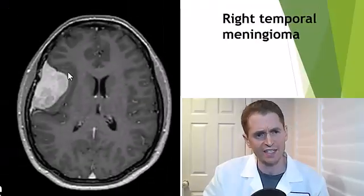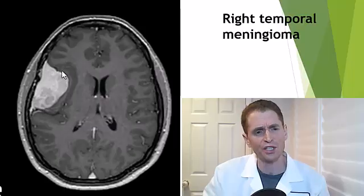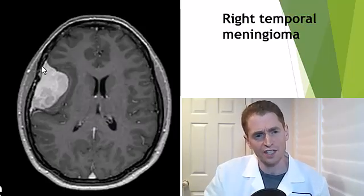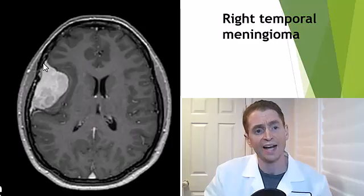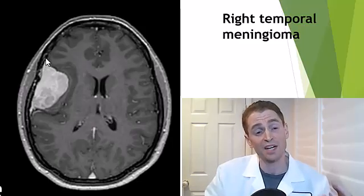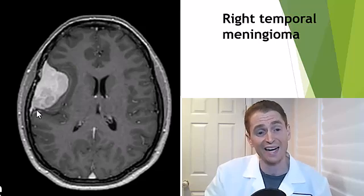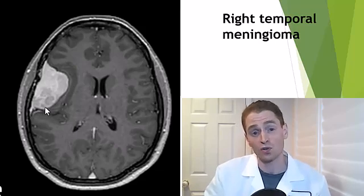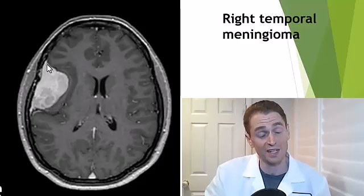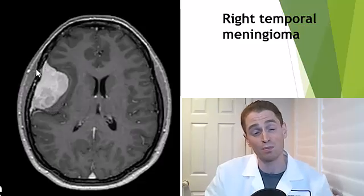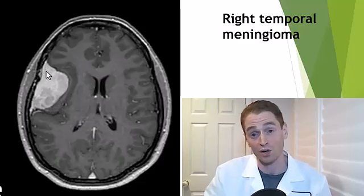The gadolinium contrast dye is excellent at visualizing tumors, which often avidly take up the dye. This is a right temporal lobe meningioma. A meningioma arises from the meninges — the coverings of the brain — and is actually extra-axial, outside of the brain, but if it becomes large it can compress and injure normal brain tissue. This is often a neurosurgeon's favorite tumor because it can often be removed successfully with a good prognosis.